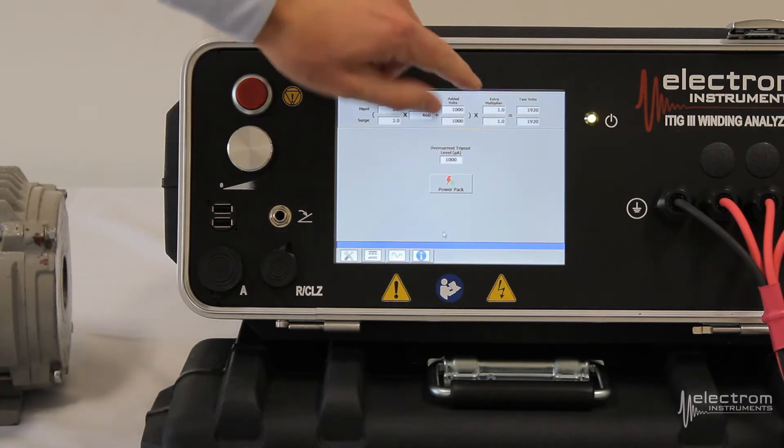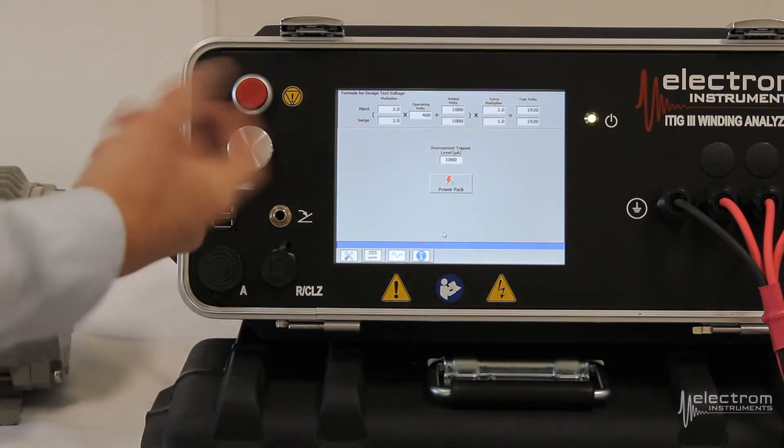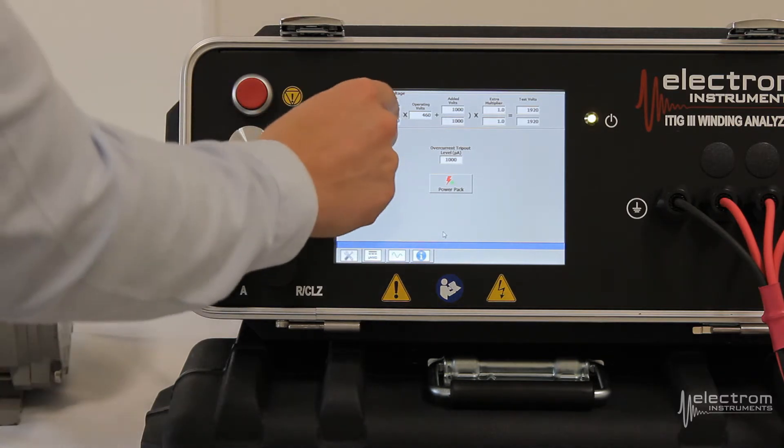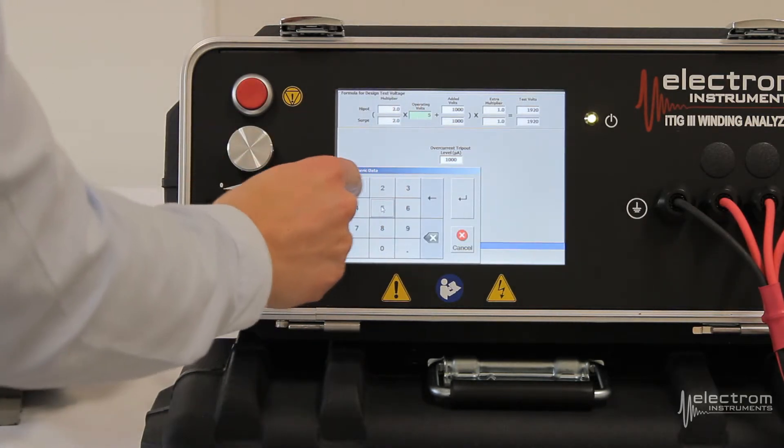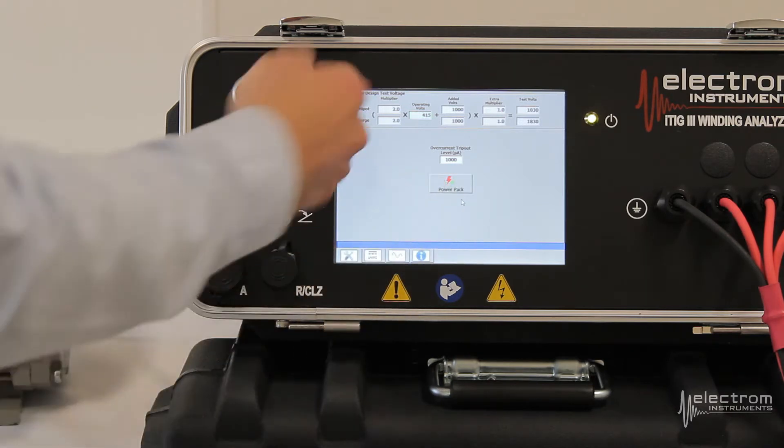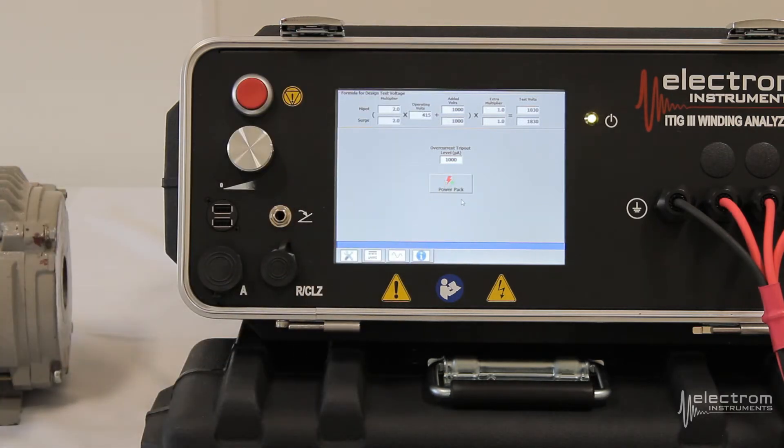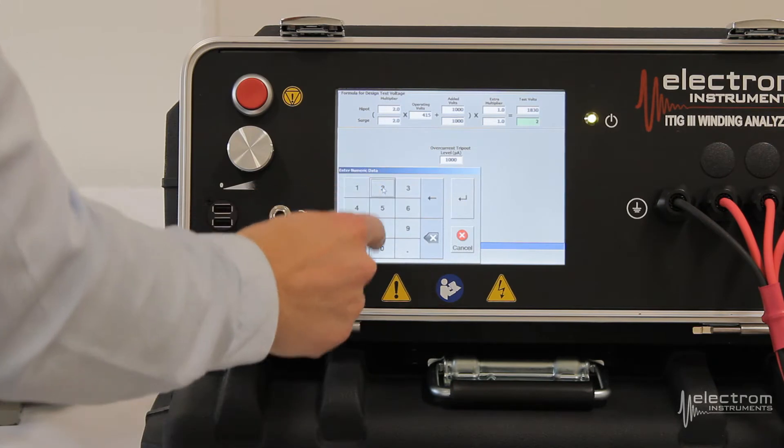There's an extra multiplier here at the end of 1. If you want to change any of the fields you can do so, operating voltage being an obvious one. So let's say this was a 415 volt instead of 460. You would enter in 415, hit enter and it will calculate your new test voltages based on the formula. If you just want to change the test voltage itself you can do so as well.